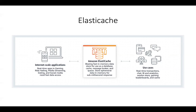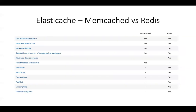Comparing Memcached and Redis: both provide sub-millisecond latency, developer ease of use, data partitioning, and support a broad set of programming languages. However, Redis supports advanced data structures whereas Memcached doesn't. Memcached has multi-threaded architecture, but Redis does not. Redis supports snapshots, replication, transactions, publisher-subscriber systems, geospatial support, and scripting. Redis has significantly more features than Memcached — this comparison table is important to remember for the exam to determine which engine fits a given use case.